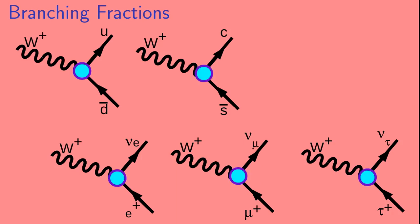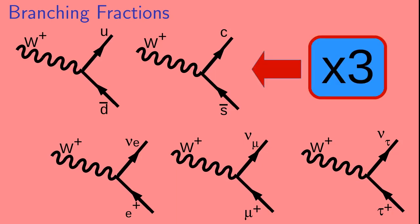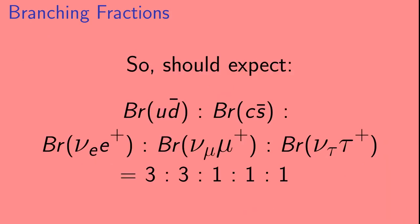Now, the interactions marked by these blue circles are all identical. So, it would seem reasonable that the W plus would decay into each of these possible final states with equal probability. That's almost right. There is a complication that each of these quarks come in 3 colors. So, each of the quark diagrams actually represents 3 different final states. So, if we want to get the relative rate of these decays, we need to multiply the quark rates by a factor of 3.